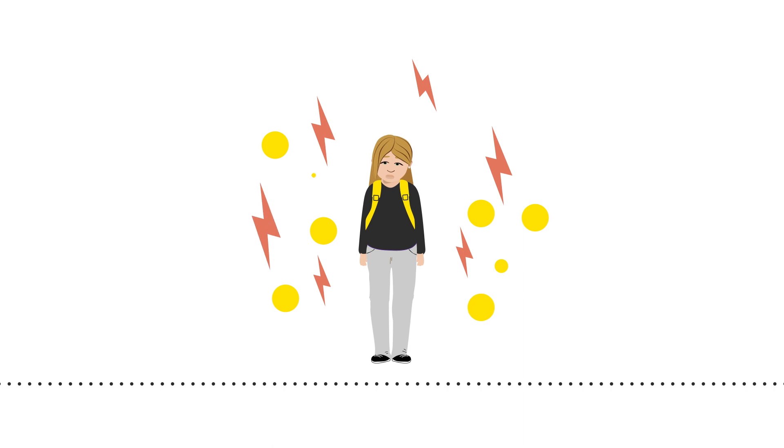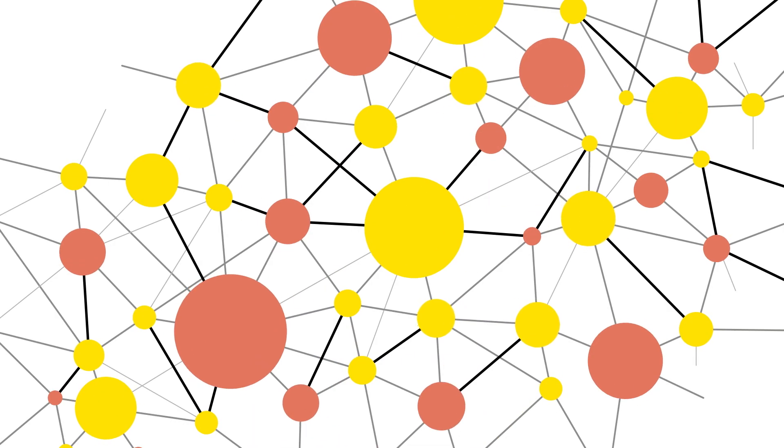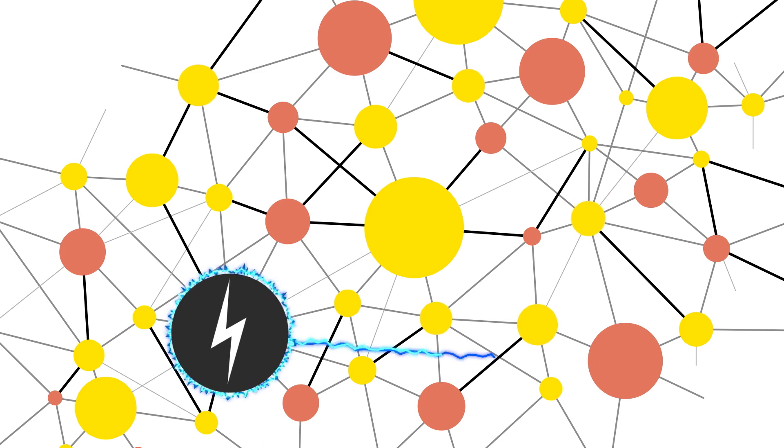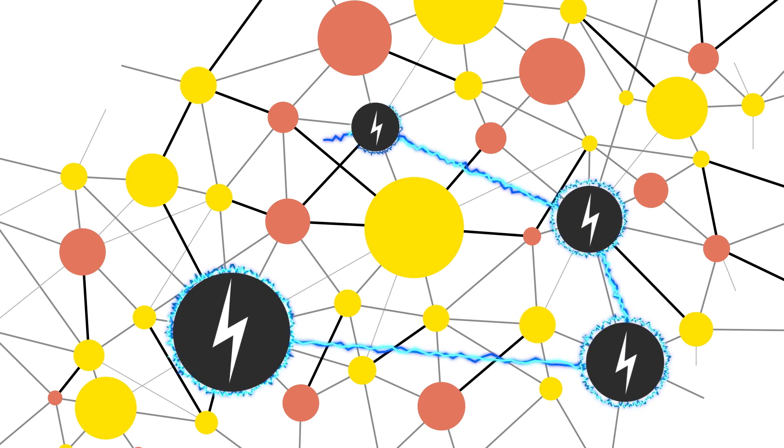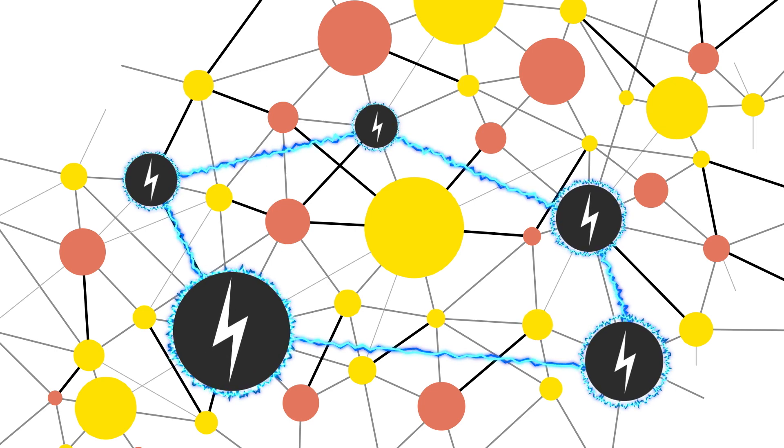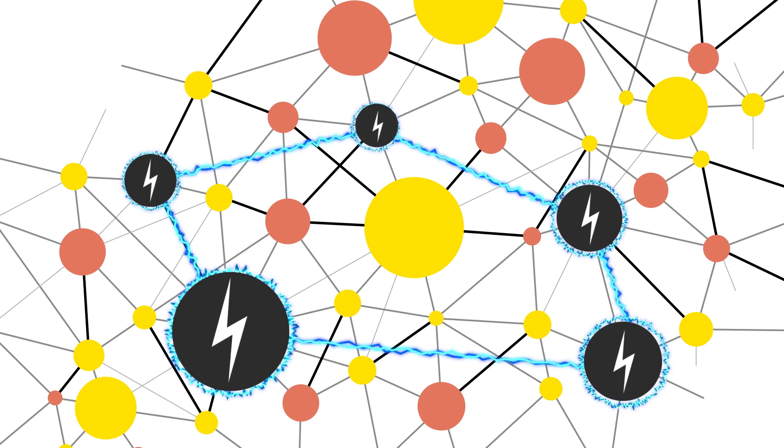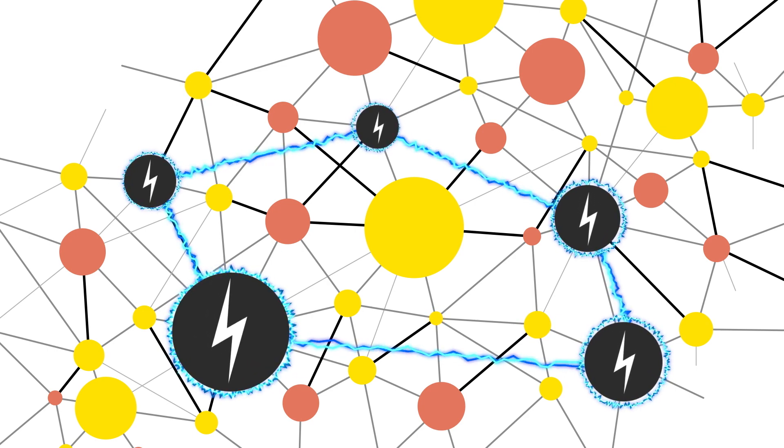But if adversity is chronic, severe, or excessive, a toxic stress response may trigger biological and behavioral changes that act as risk factors for poor mental, emotional, behavioral, and physical health. The green bubble disappears to reveal neural pathways full of yellow and red dots. Several dots are transformed into black dots with lightning bolts. A blue electric charge flows throughout the new black dots.